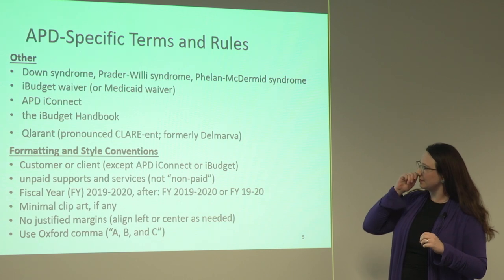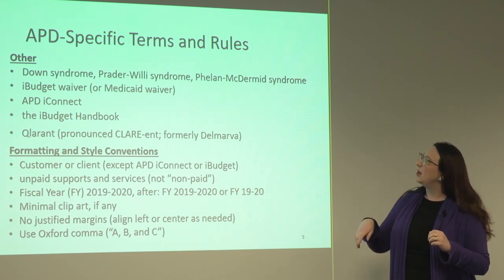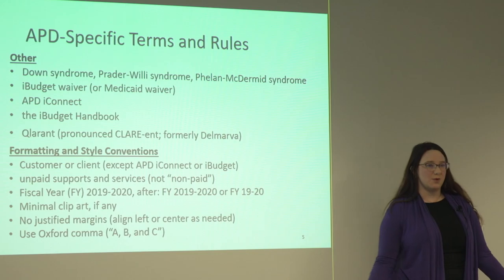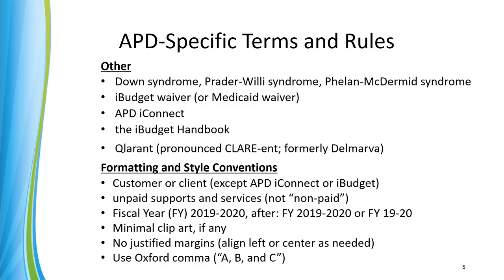These get a little tricky. Down syndrome is one you'll see a lot of different ways, but the correct spelling in this country, this agency, is Down with a capital D, no apostrophe S, syndrome lowercase. Prader-Willi, capital, syndrome lowercase. Phelan-McDermid, lowercase syndrome. The iBudget waiver, but lowercase waiver.